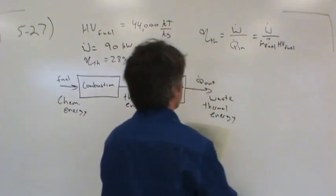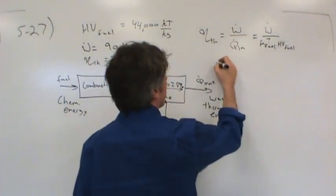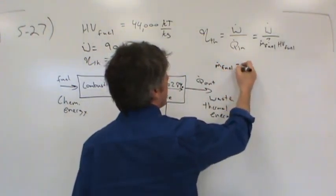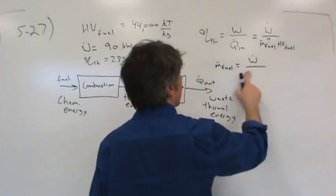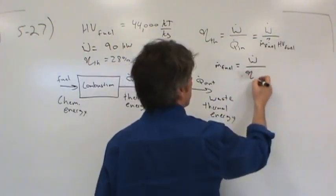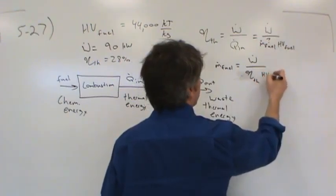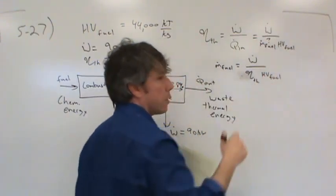As I said, the math is pretty straightforward. You guys could all do this. The mass flow rate of the fuel would be simply the power output of the engine divided by the thermal efficiency multiplied by the heating value of the fuel. I just solved it algebraically.